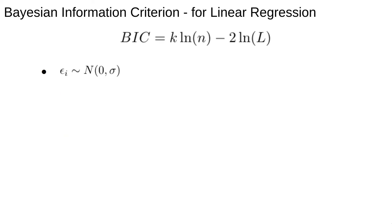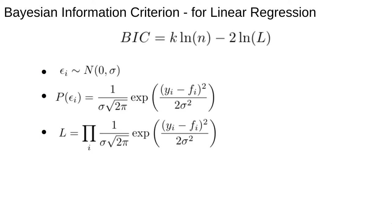To get some intuition for BIC, let's look at a linear model. We calculate the likelihood by recalling that the residuals are supposed to be normally distributed with mean zero and constant variance. This means the probability to measure a given residual should be given by the usual formula for a Gaussian function. The likelihood is then the product of the probabilities for all the residuals. Remember, they're supposed to be independent so we can multiply them together.